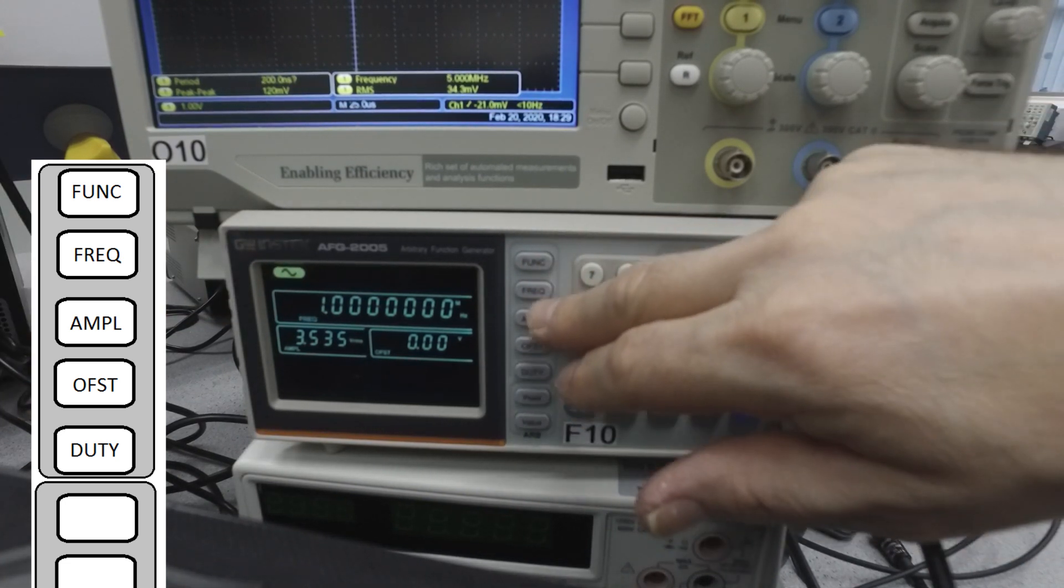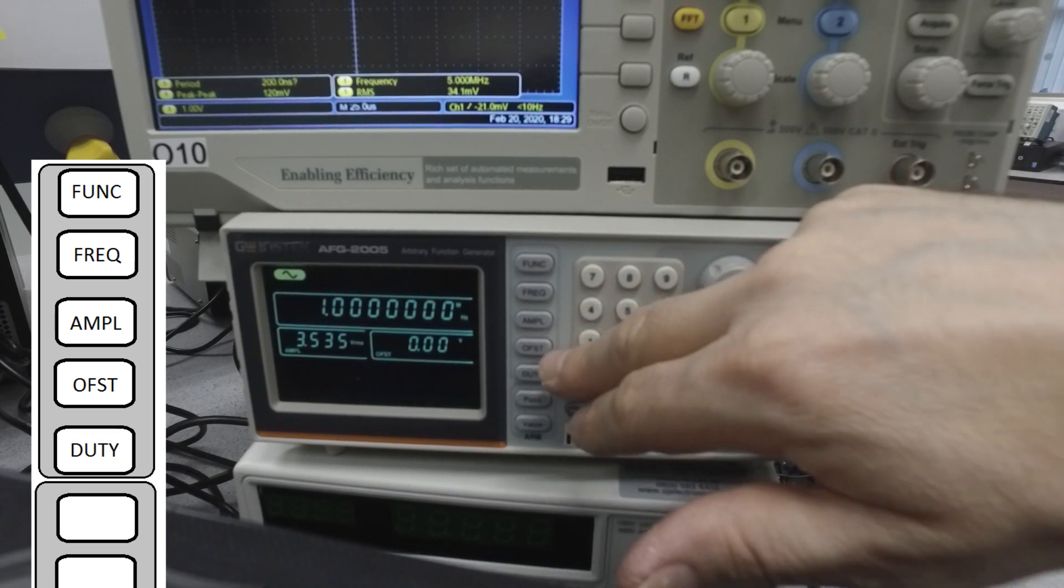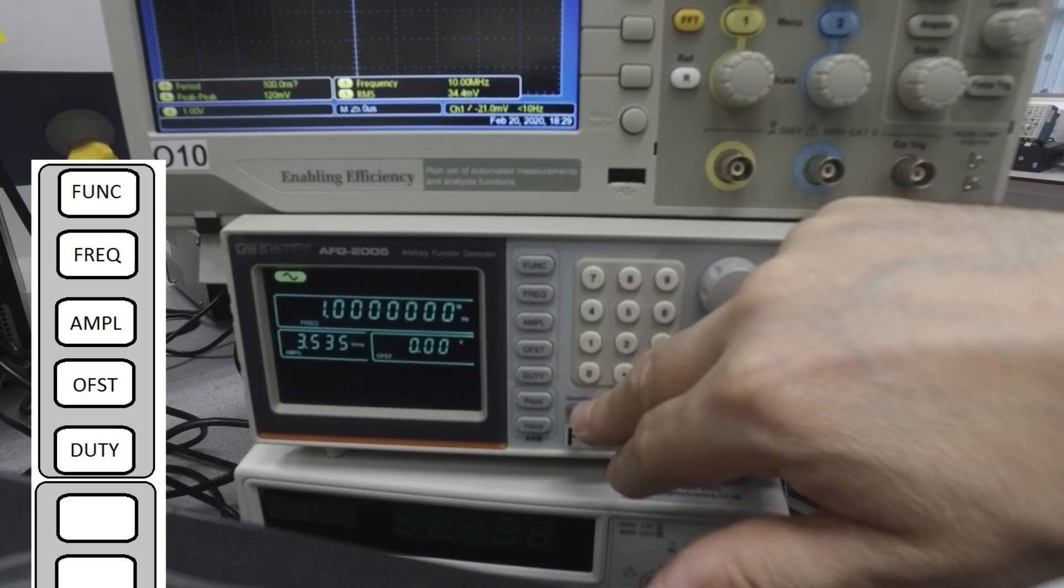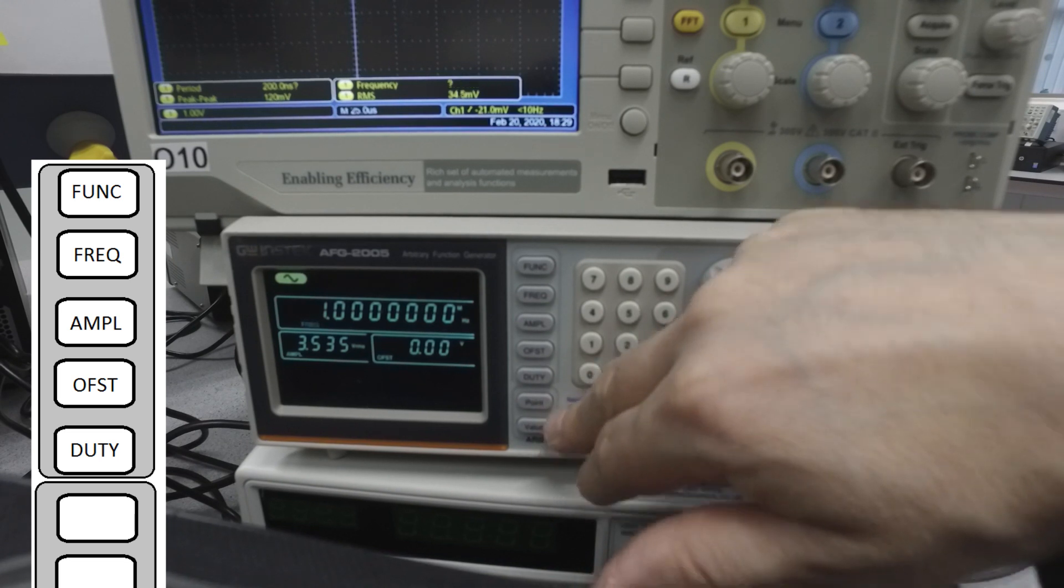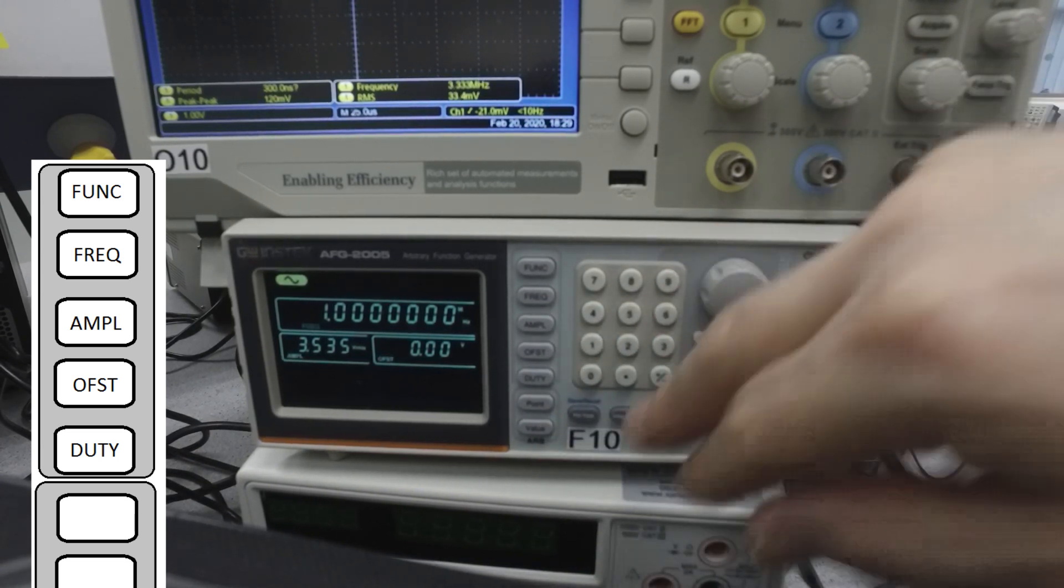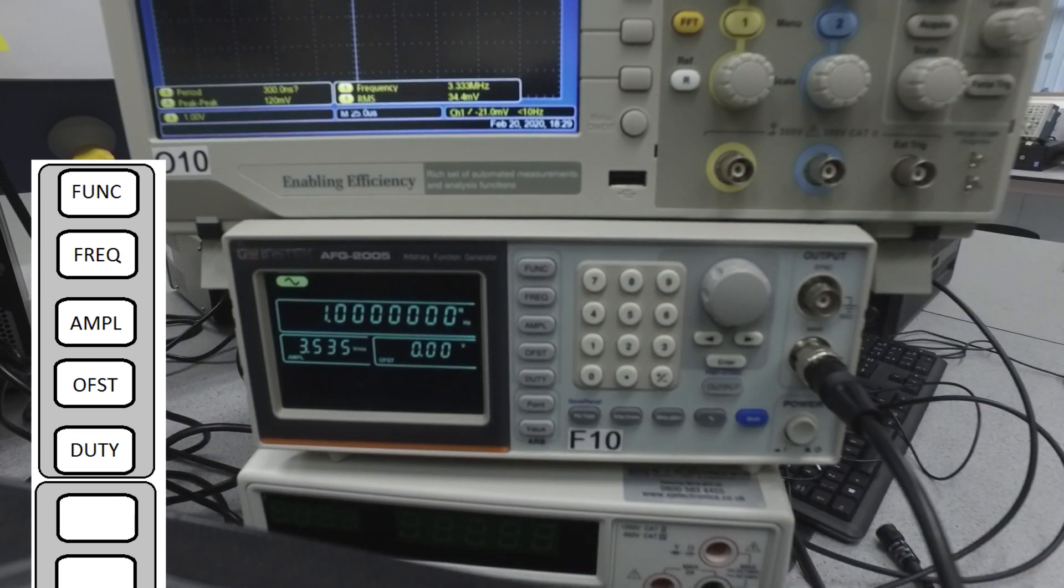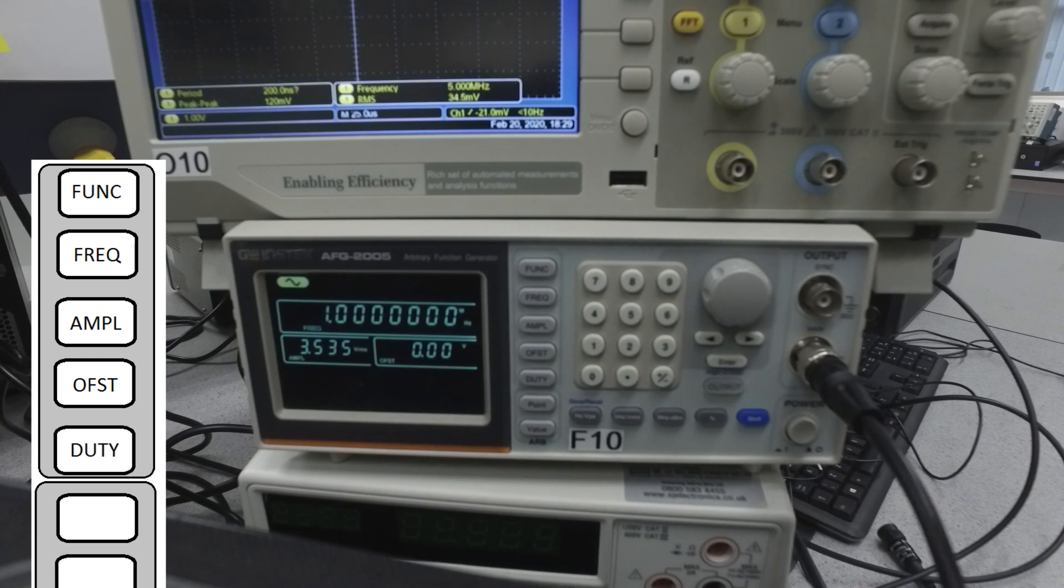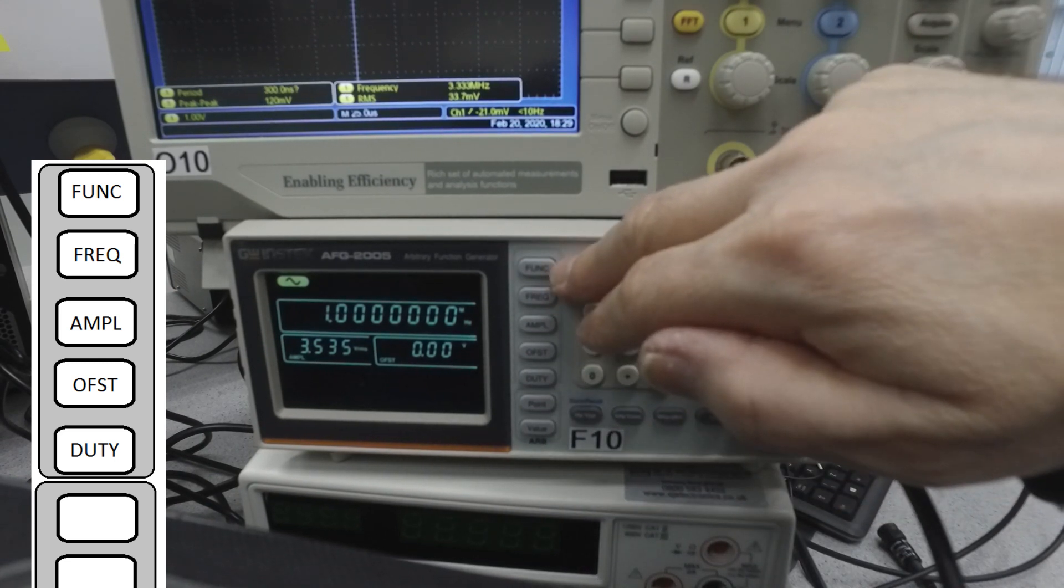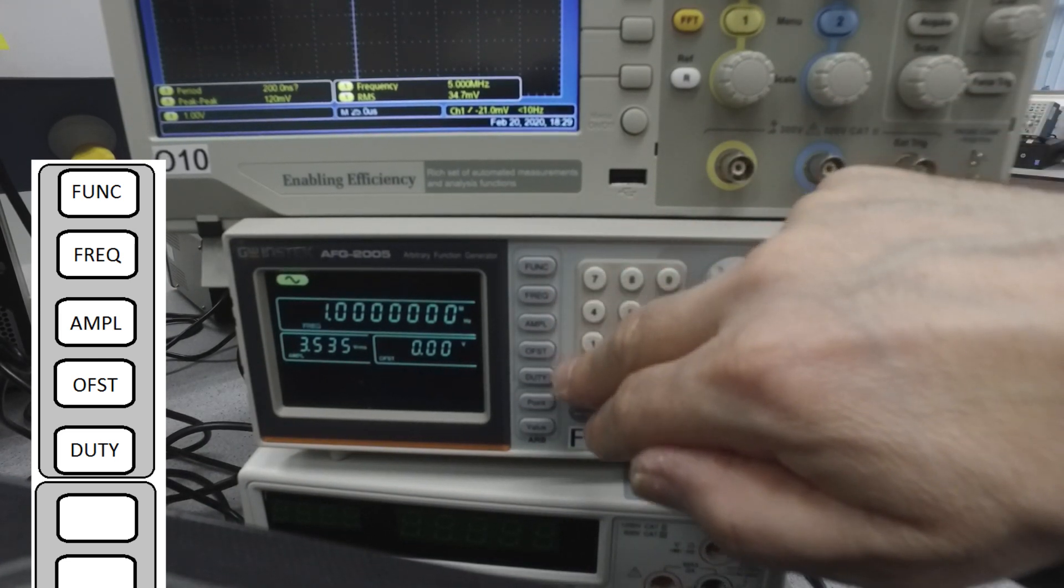You've got frequency option, amplitude option, offset, duty cycle, and point and value for more detailed measuring on the ARB later on. Now, all we're using today is the function, frequency, amplitude, offset, and duty cycle.